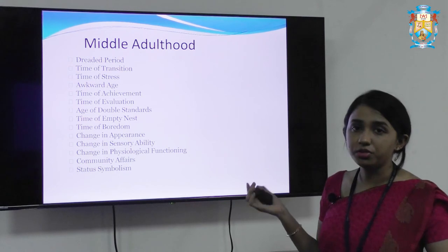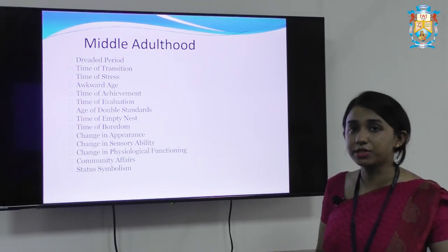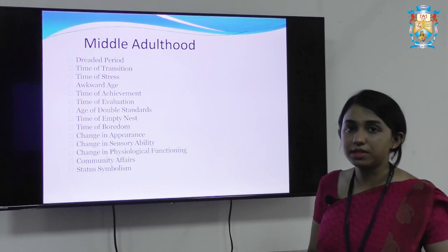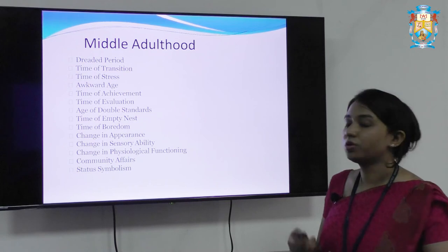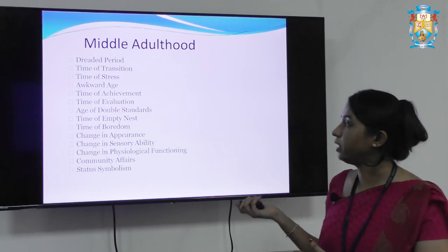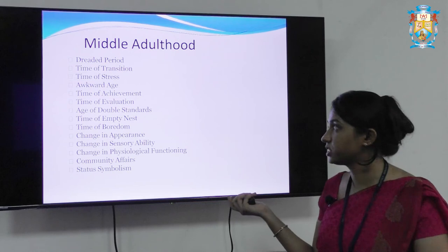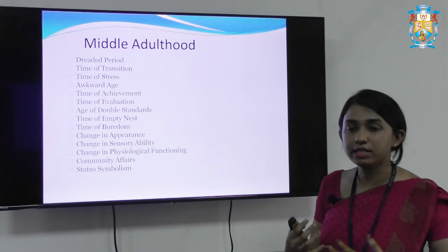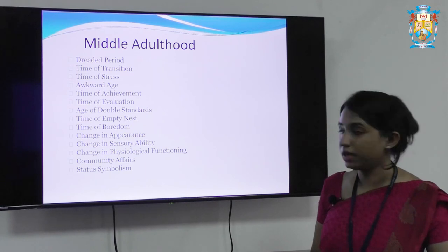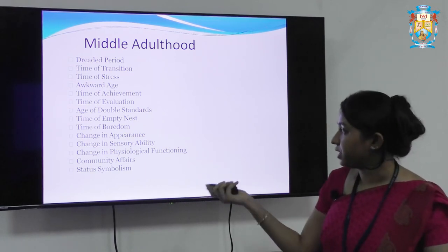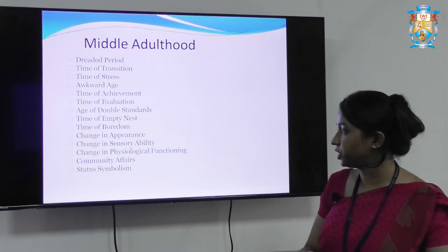Characteristics of middle adulthood: here the person has already settled down, and now has to look after the family, keep responsibilities — maybe as a father or mother, breadwinner of the family, and look after ageing parents. It is a time of transition, time of stress, an awkward age where the body's functioning is declining. The person has to take care of themselves, and experiences change in appearance, change in sensory ability, and psychological functioning will change or decline.